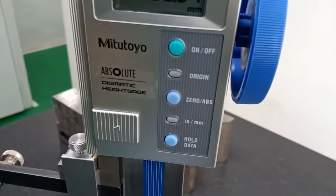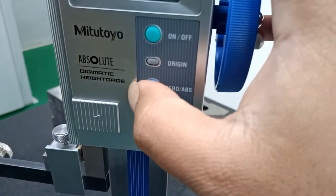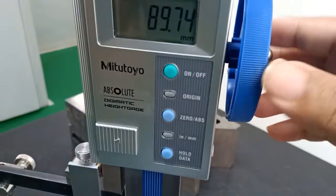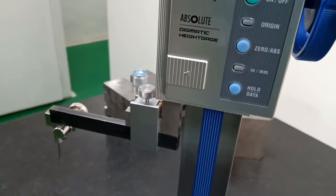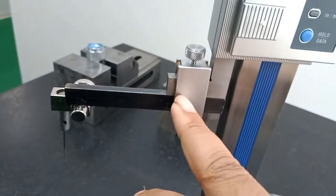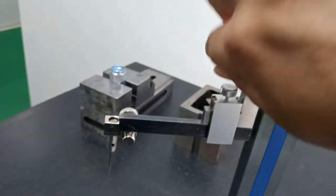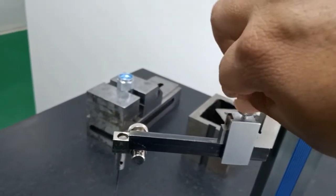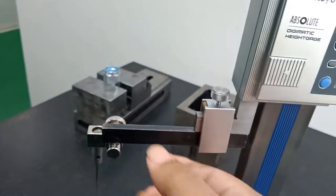And this is absolute digimatic height gauge. We can replace the attachment also. This is scriber. Let's loosen this screw and we can remove this, we can put attachment.